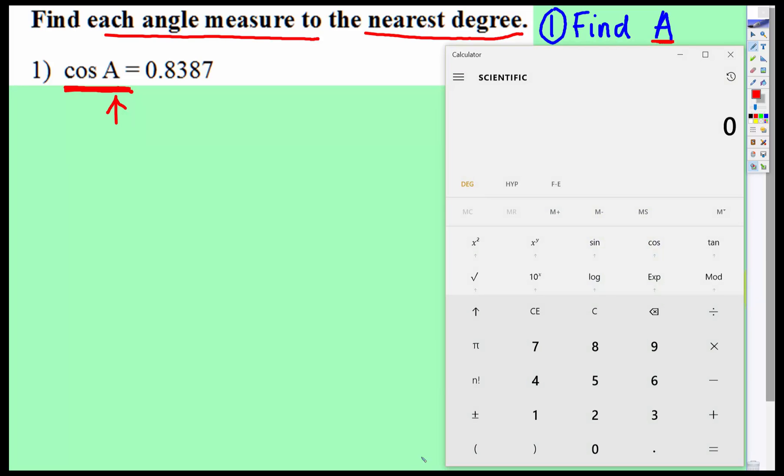On a calculator, this is what you'd be doing. You'd type in 0.8387. Then I'm going to hit the up arrow key, it's like the shift key on those calculators. See where it says cosine negative 1? That means the same thing as arc cosine.